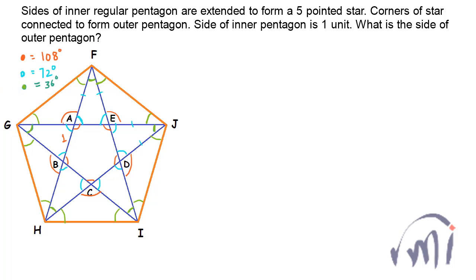We have to find the length of the side of the outer pentagon. This outer pentagon will also be a regular pentagon because each angle here is again 108 degrees — three times 36 is 108. Since all the internal angles of the outer pentagon are equal at 108 degrees, it is a regular pentagon, and each side of this outer pentagon will also be equal. Now let's solve this.